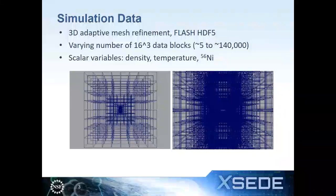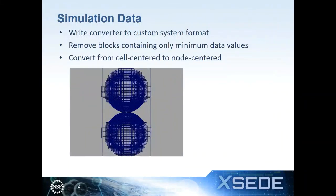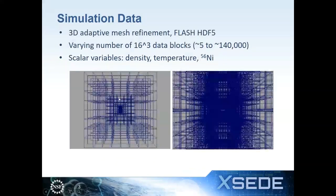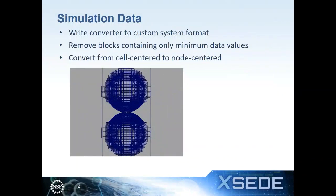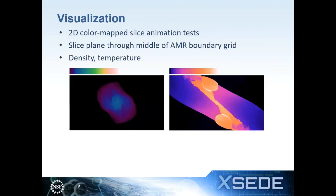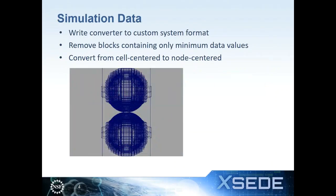The camera far away shows the overall structure, but most of the interesting detail with the collisions is deep within the AMR grid. A lot of upfront work in visualization is data conversion. I have a custom rendering and animation system I've been writing over the years with a custom raw binary format to convert the Flash HDF5 data. To save processing time, I removed blocks with only minimum data values outside the areas of interest, and converted from cell-centered to node-centered format for my rendering system.